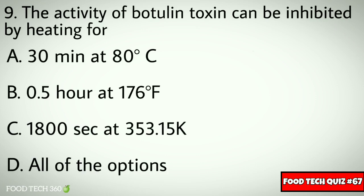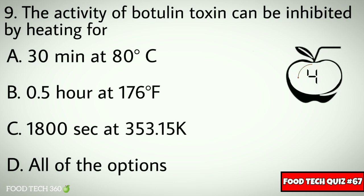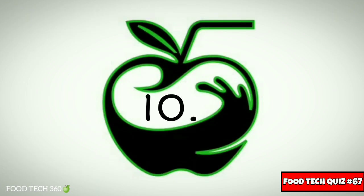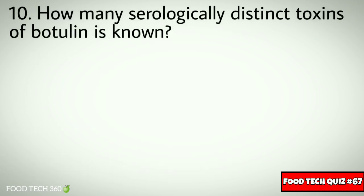Question number nine: the activity of botulin toxin can be inhibited by heating for? Options: A) 30 minutes at 80°C, B) 0.5 hours at 176°F, C) 1800 seconds at 353.15 Kelvin, D) all of the options. Correct answer: D) all of the options.